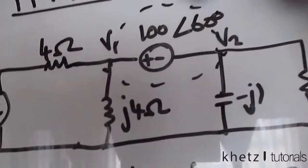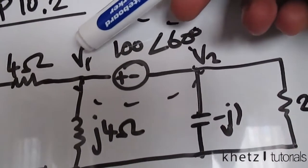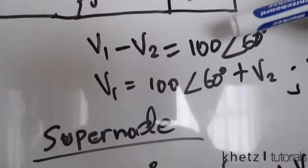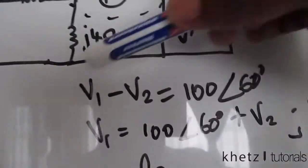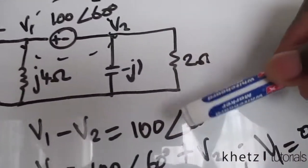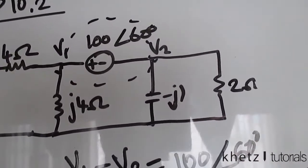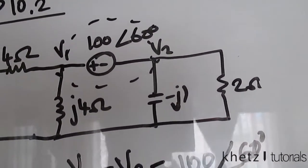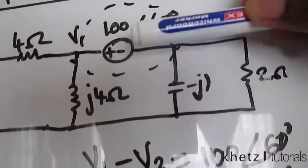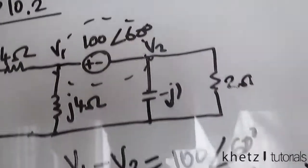First we can have a formula which is associated with this voltage source. We start from the positive side of the voltage source going to the negative side. This gives us the first formula: V1 minus V2 equals the value of the voltage source. You move from the positive side and subtract the one which appears on the negative side, and equate that to the value of the voltage source.